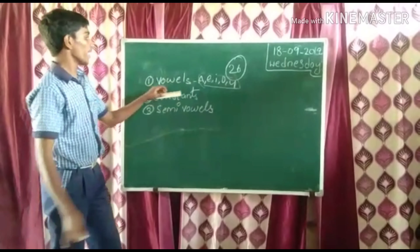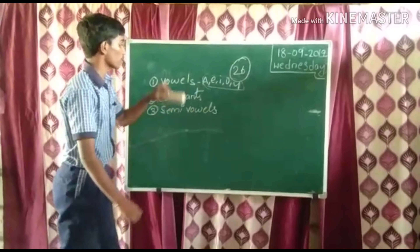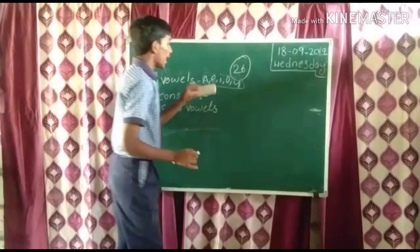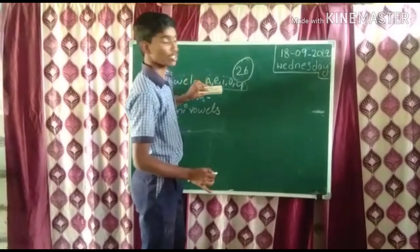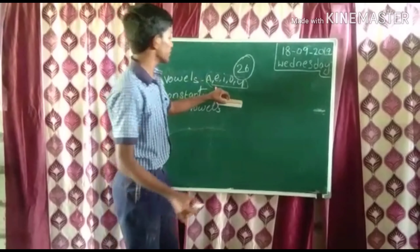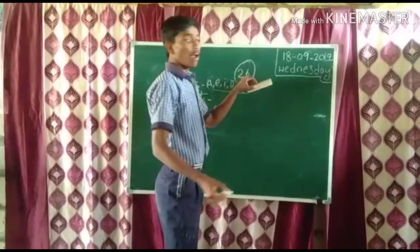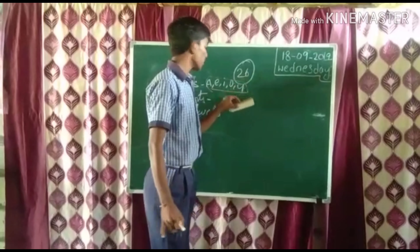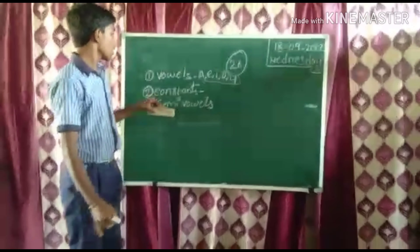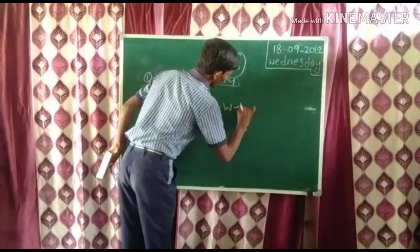These are the main parts. Totally 26 alphabets. Consonants means except these 5 vowels, all remaining 21 letters are called consonants. Semi-vowels means W and Y.